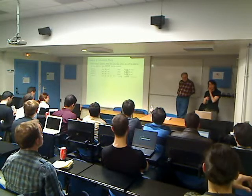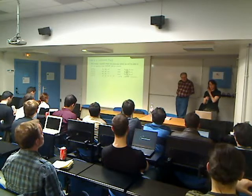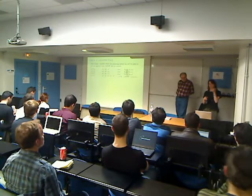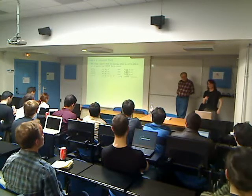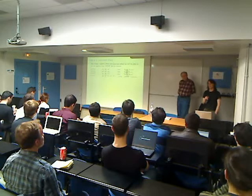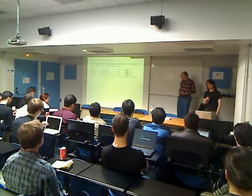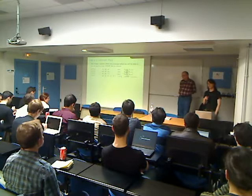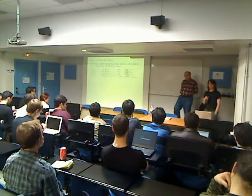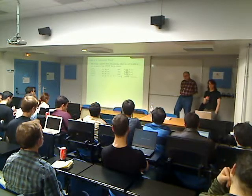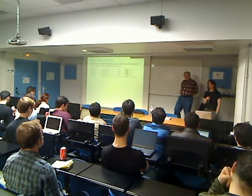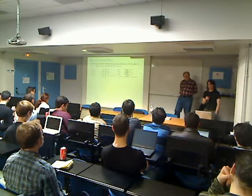Not all of the registers are callee-saved. So in x86-64, arguments are generally passed with RSI, RDI, etc. in the registers. And those registers aren't callee-saved, so we don't actually have direct control over them.